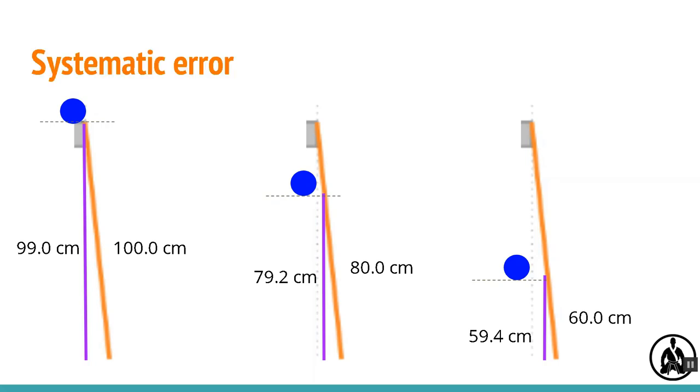This type of error is called systematic error. It usually makes all your measurements too big or all too small, often by a fixed amount.